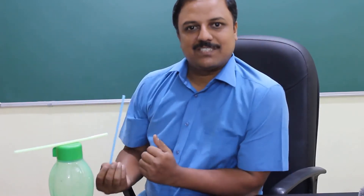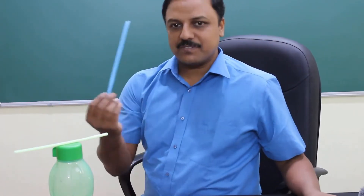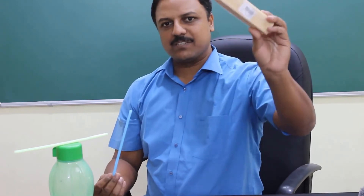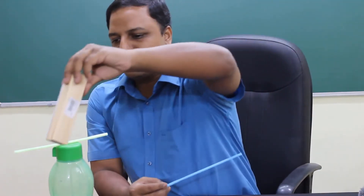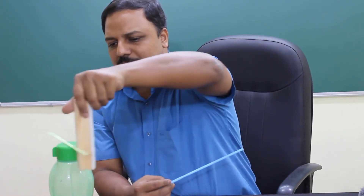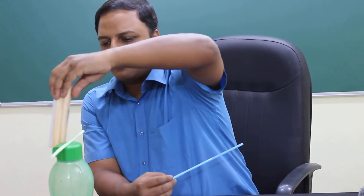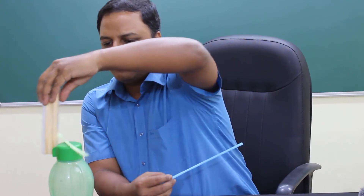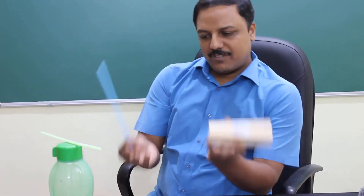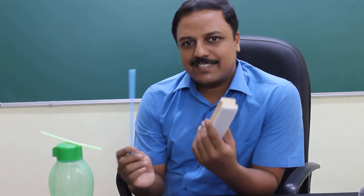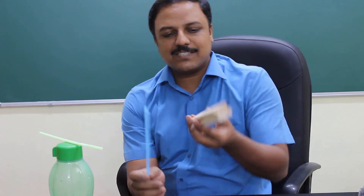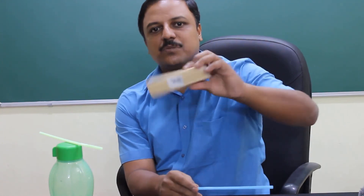Now find out why this happens. At the same time, instead of a straw, suppose if I bring some other object — say a piece of wood or something like this — and then bring it close, you can see that it gets attracted. So try to explain these two phenomena: why it is repelling when both are straws, and why does it get attracted to some other material?